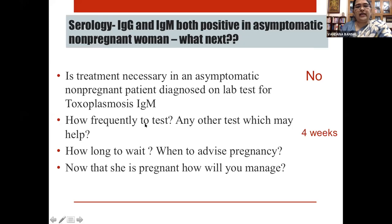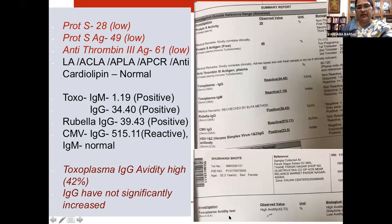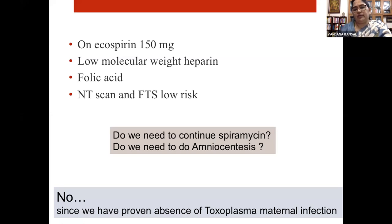The avidity test showed high avidity at 42 percent, proving she did not have an acute toxoplasmosis infection despite persistent IgM and IgG positivity. She was found to have protein S and antithrombin III deficiencies and was started on low molecular weight heparin and aspirin. Amniocentesis for toxoplasmosis was not performed since maternal infection had been ruled out by high avidity.